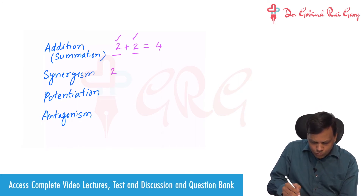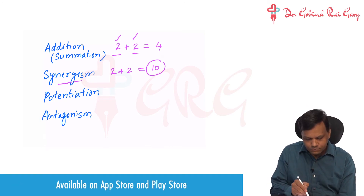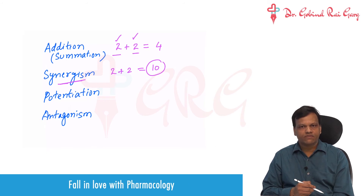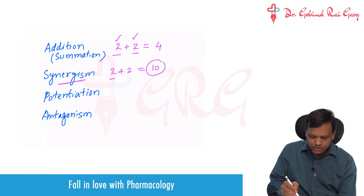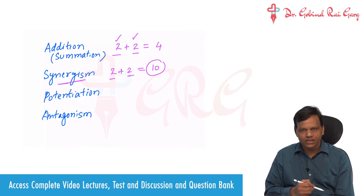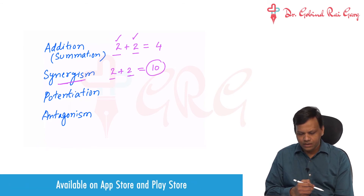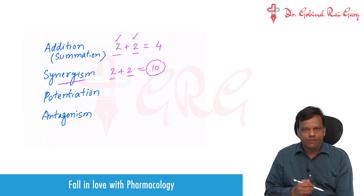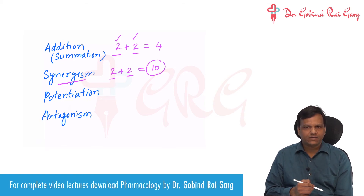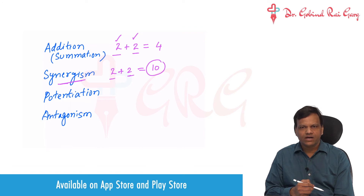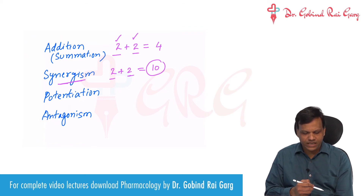On the other hand, 2 plus 2 may equal 10 — this is synergism. In mathematics, 2 plus 2 is never equal to 10, but in pharmacology it may be. Synergism means both drugs are producing an effect, but when combined, the combined effect is much more than the additive effect. An example is cotrimoxazole, which contains trimethoprim and sulfamethoxazole. Trimethoprim is static, sulfamethoxazole is static, but when we combine the two as cotrimoxazole, it becomes cidal — it will kill the bacteria. That interaction is synergism.